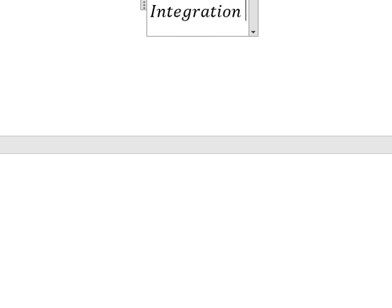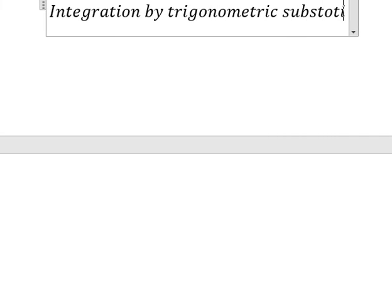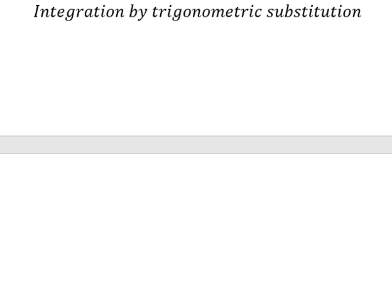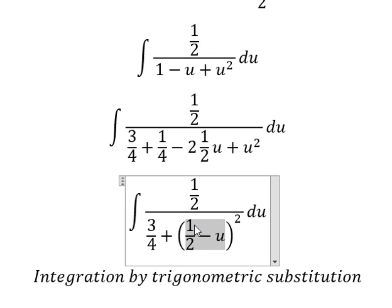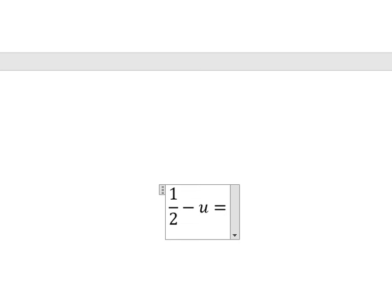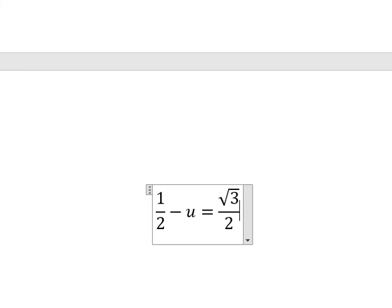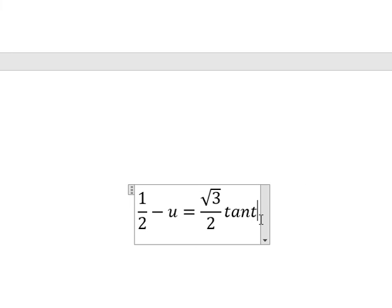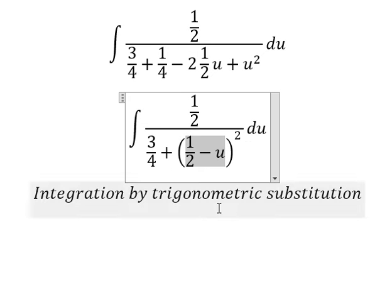We can use integration by trigonometric substitution. In this situation I will put 1 over 2 minus u equals to the square root of 3 over 2, and I will use tan t. If I substitute this in, we have 3 over 4 tan squared t. We can do factorization: 1 plus tan squared t, which we change to secant squared t, and then we simplify with du.